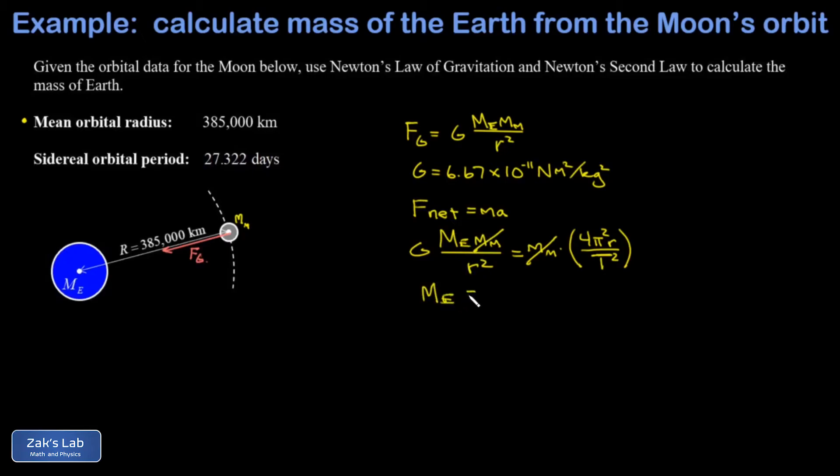And so we're trying to solve for the mass of the Earth. I'm going to isolate that real quick. So we'll multiply both sides by r² and I get 4π²r³ divided by GT².